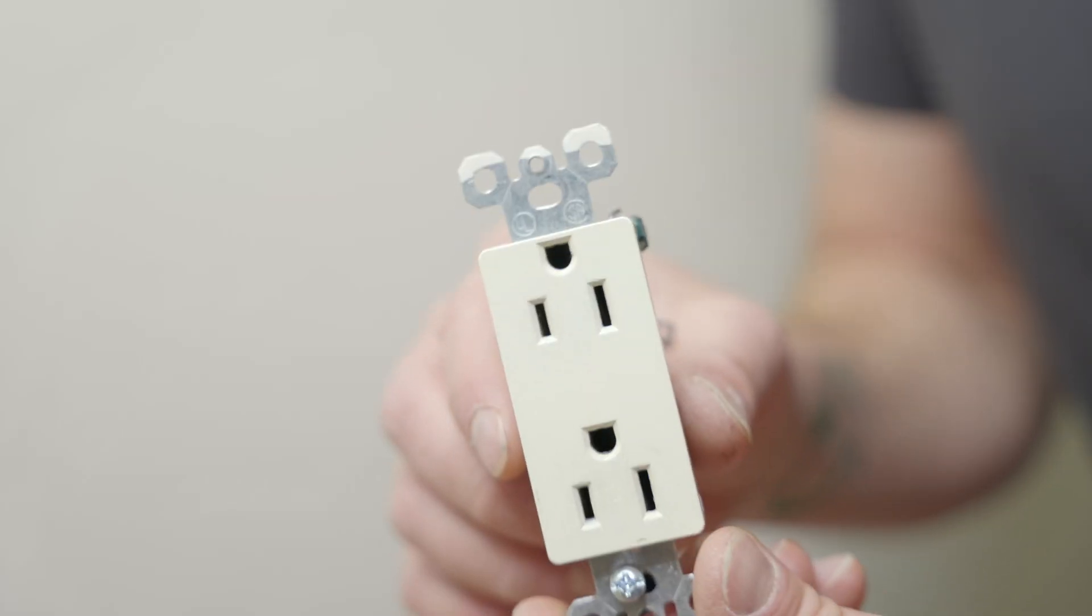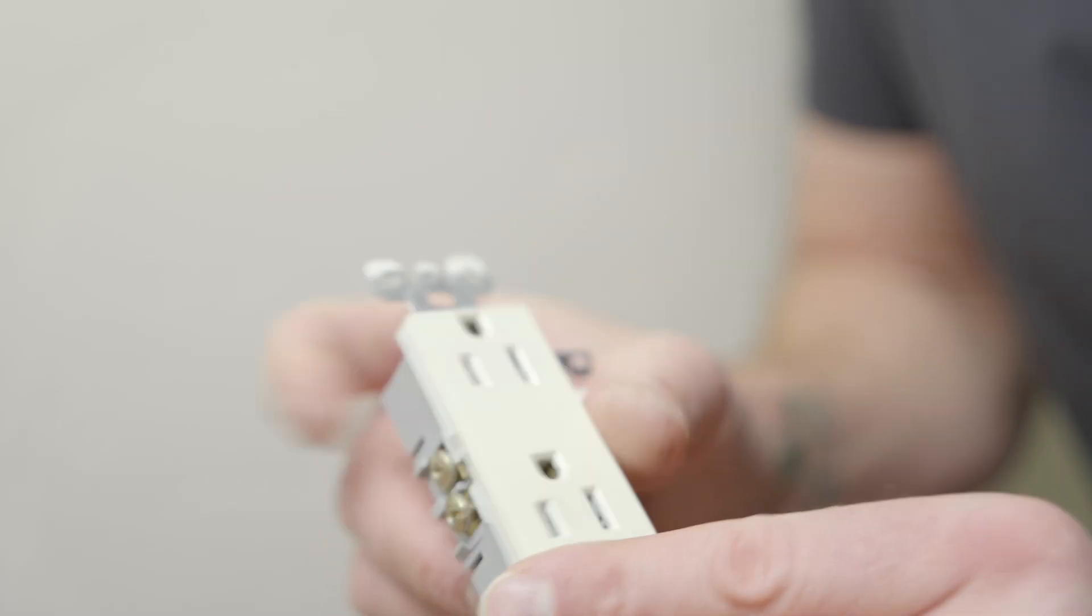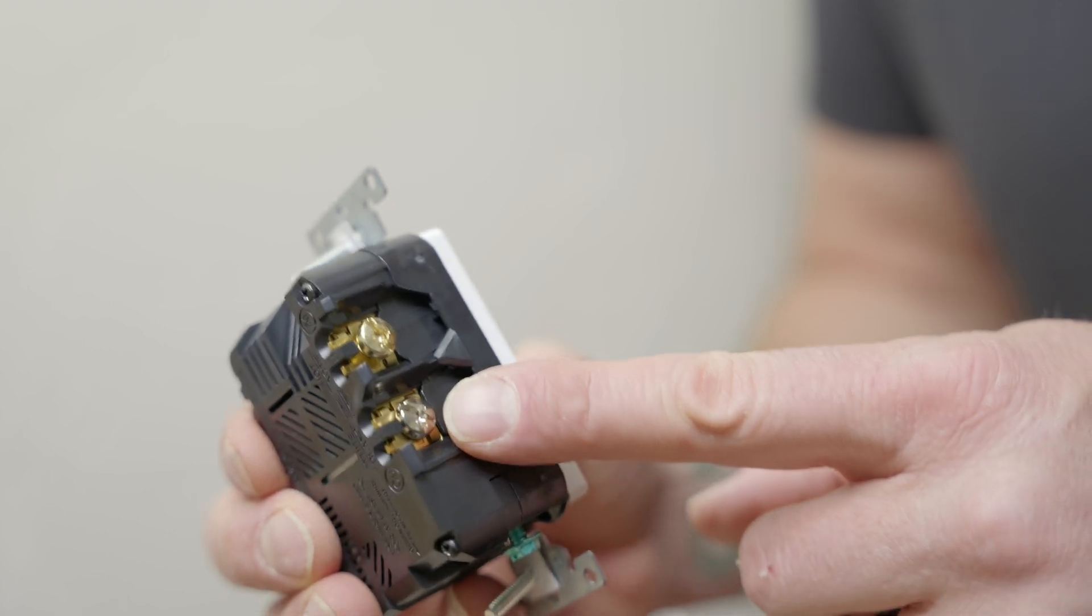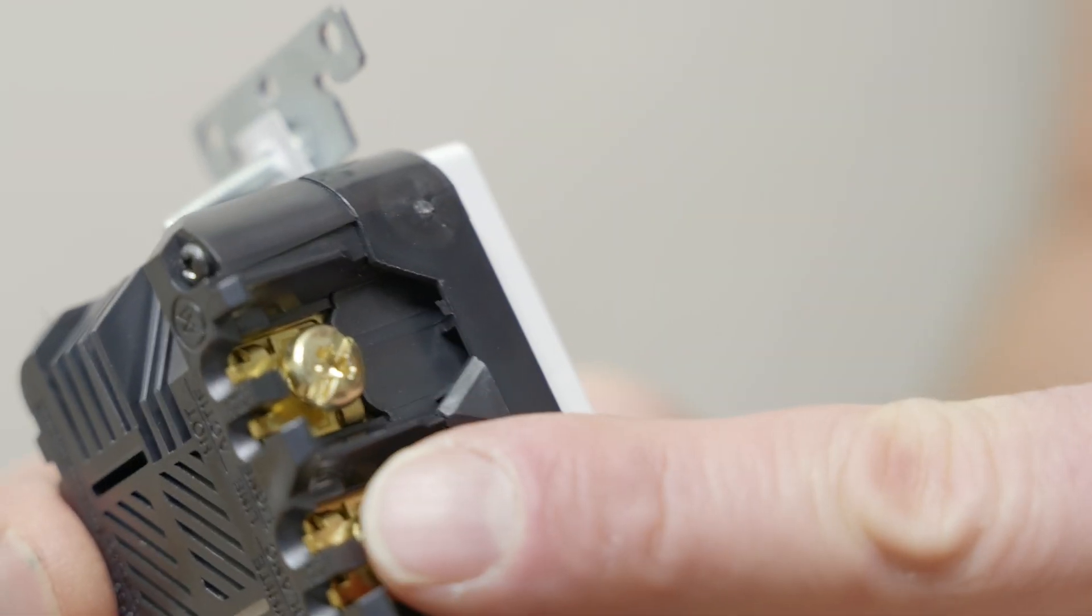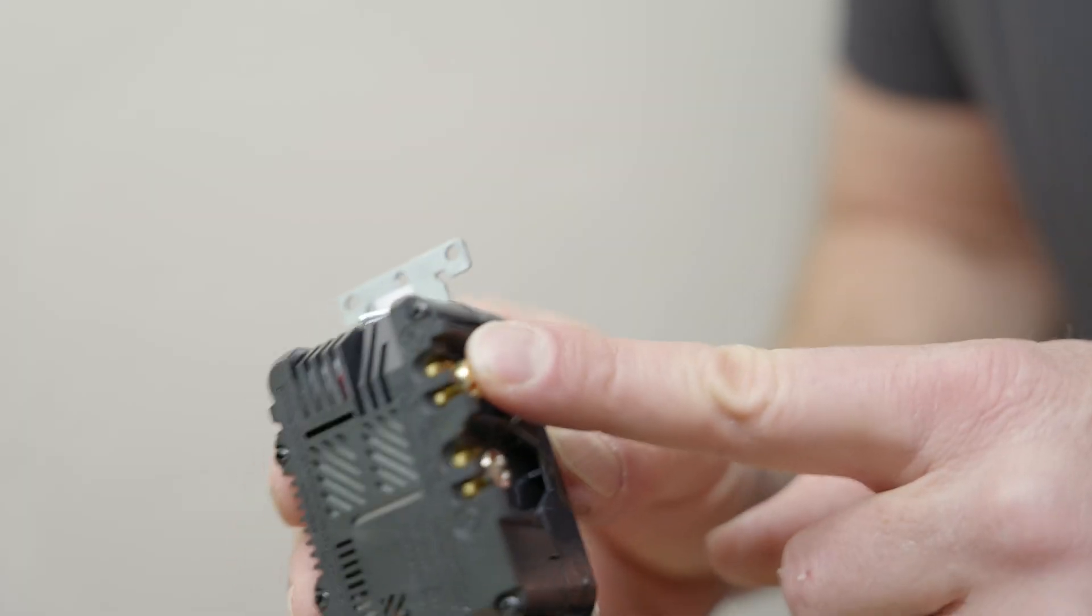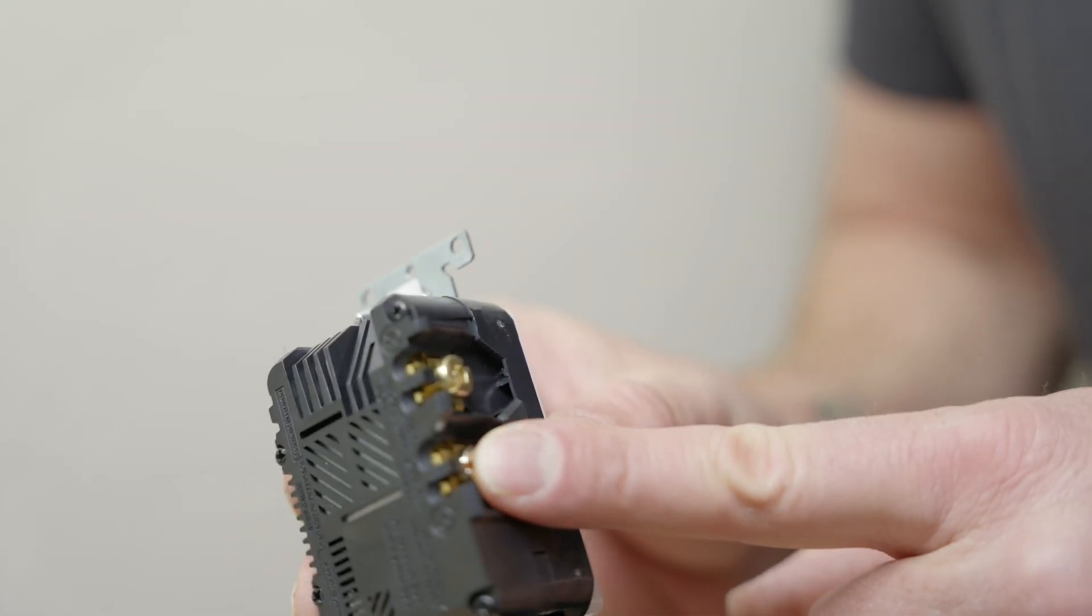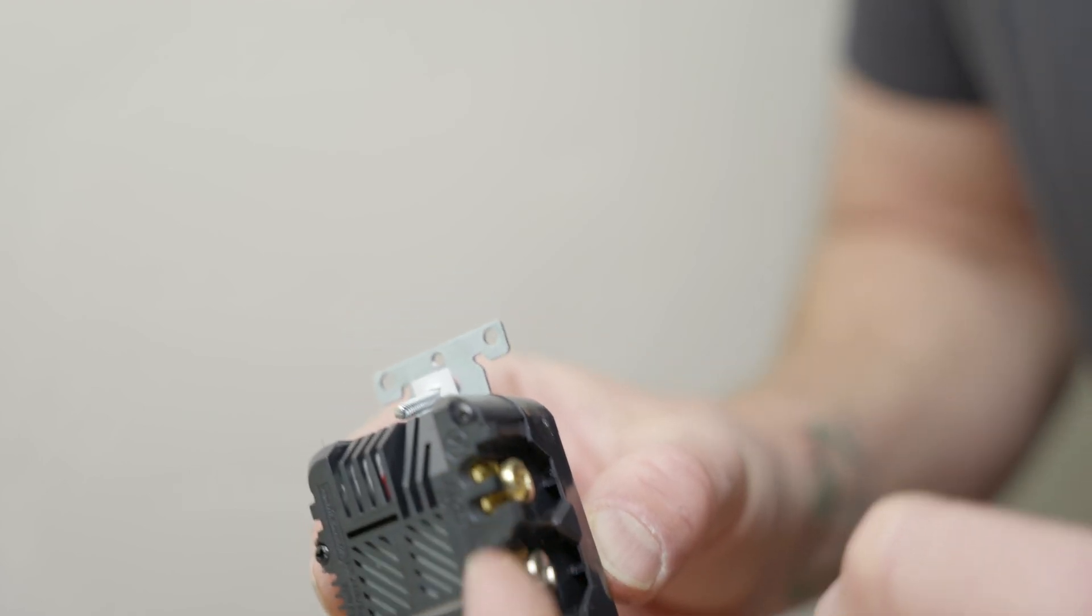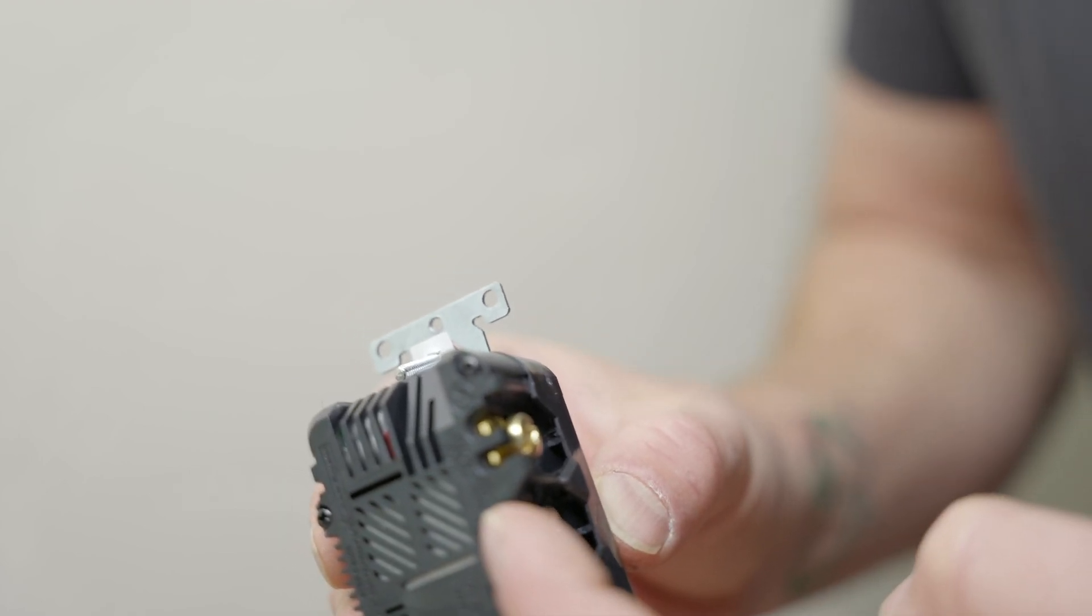One important thing to note you had two terminals on each side as you can see there for hot neutral. On the new outlet we're only going to have two terminals total. On this one it tells you right on it hot up top and neutral on the bottom. And we're going to have to use two wires on the back slot method.